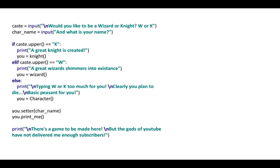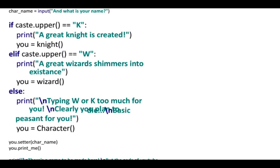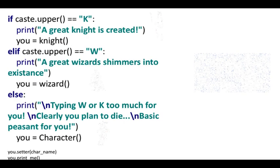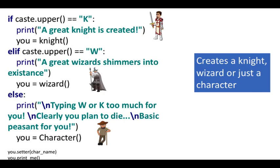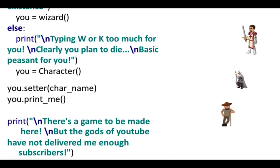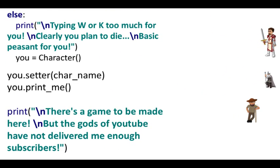If you type in K, a great knight is created. If you type in W, a great wizard shimmers into existence. Otherwise, well, clearly you're not that smart if you don't know to type W or K, and you become a basic peasant, which is just the basic character. So choose your name and class. Creates a knight, wizard, or just that plain character. And let's see what that code will do for us.